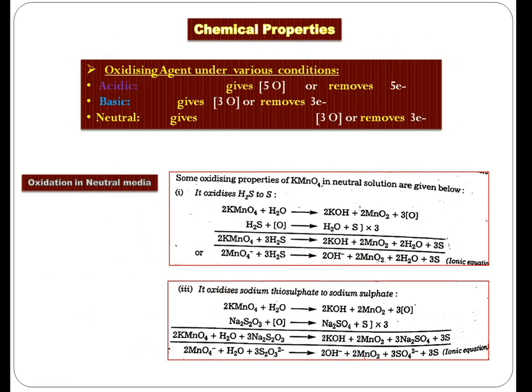Now, the most important portion in potassium permanganate is the chemical property. And among the chemical properties, the important one is the oxidizing agent. Since in potassium permanganate, manganese has plus 7 oxidation state, we know that when any transition element has high oxidation state, it's a strong oxidizing agent. The important point here is it acts as oxidizing agent in acidic medium, in basic medium, and in neutral medium. And among these three media, in acidic medium it acts as a powerful oxidizing agent.